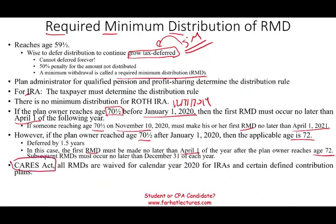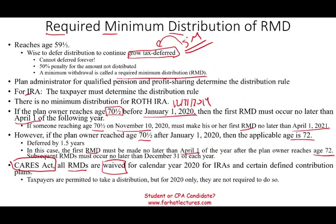Under the CARES Act, due to COVID, the required minimum distributions were waived for calendar year 2020 for IRAs and defined contribution plans. Taxpayers were permitted to take distributions but were not required to do so. A similar waiver occurred during the 2007–2008 financial crisis — when the stock market crashed, the government suspended the minimum required distribution because forcing people to cash out depreciated investments would be harmful. These waivers provide flexibility during times of financial crisis.